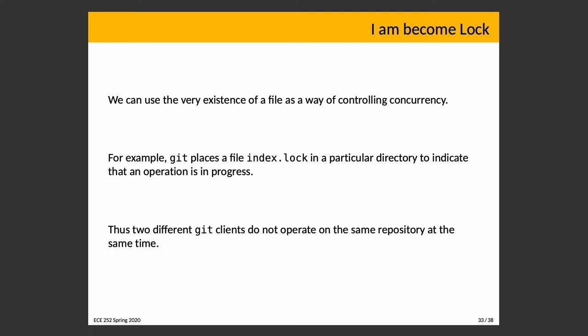If your git client crashes, the index.lock file might not get removed and you may have to delete it by hand to perform operations in that repository again. The existence of that index file ensures two operations don't run concurrently. The repository state on disk is the data being operated on, and in theory a shared drive could be accessed from different systems simultaneously. Your Unix account already works this way — you can access the same data from ECEUbuntu as from ECETesla, since your home directory is on a shared drive.